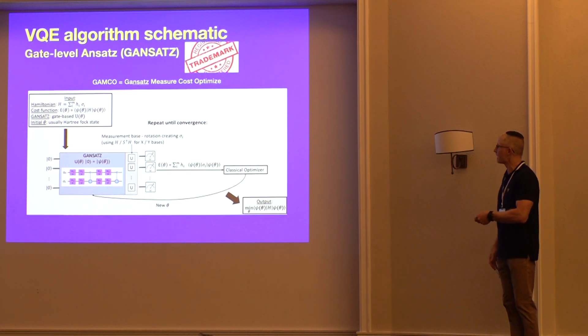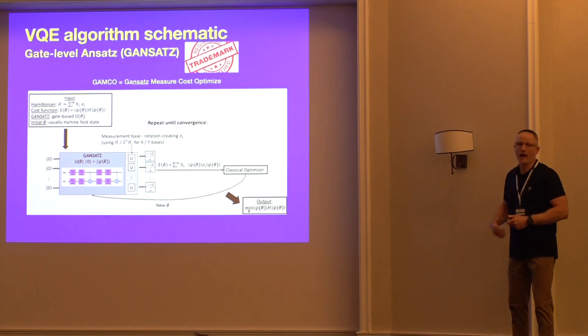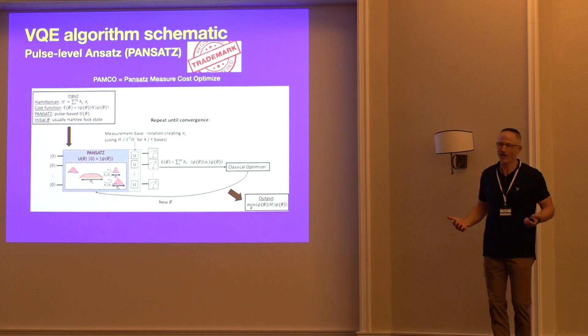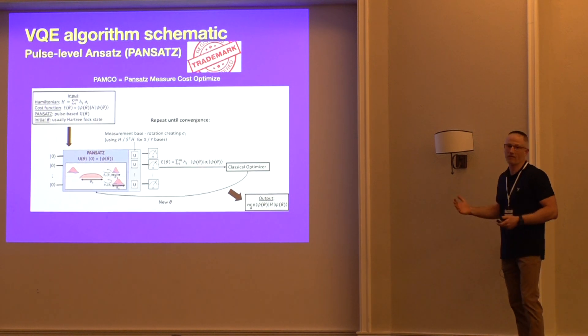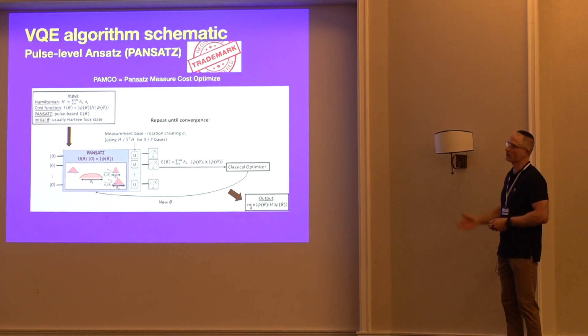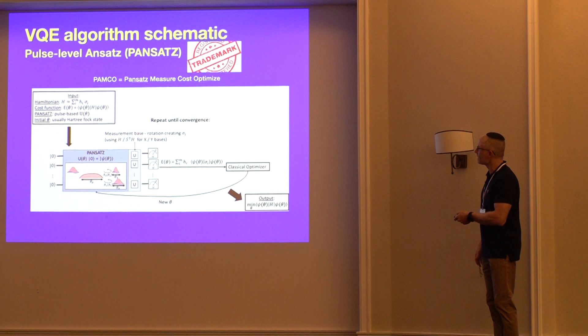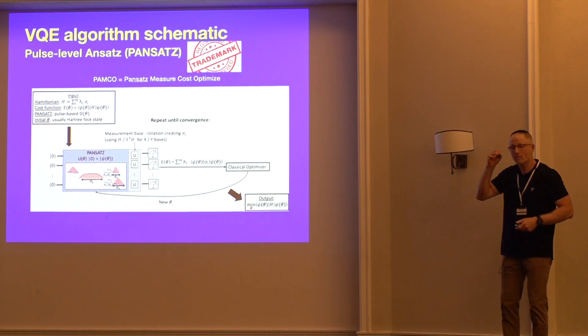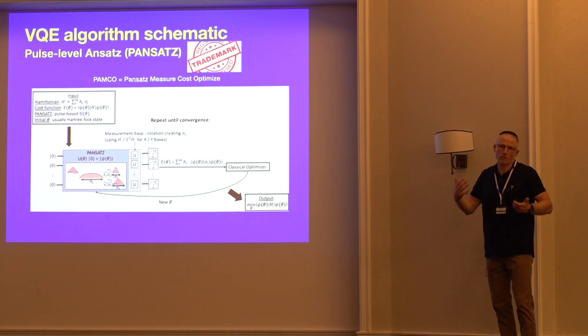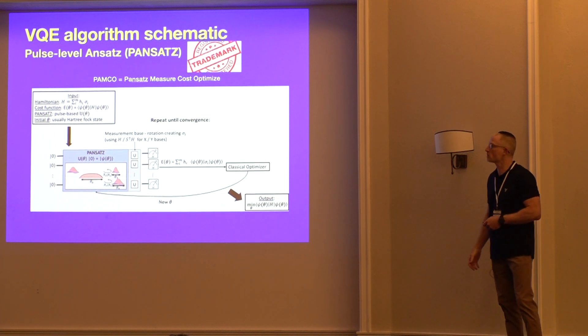We're going to simply keep your eye on this blue box. We're going to simply switch from the gansatz to a pansatz. Or if you're from New York, a pansatz. And this is a pulse-level ansatz. And, of course, then instead of AMCO, we have POMCO and GOMCO. It just goes on and on. But you can see here, basically, all we've done is replace the gate-level ansatz where we had parameterized gate angles with a pulse-based ansatz where the parameters are up to us to choose, and we'll get into the details of that in just a minute.